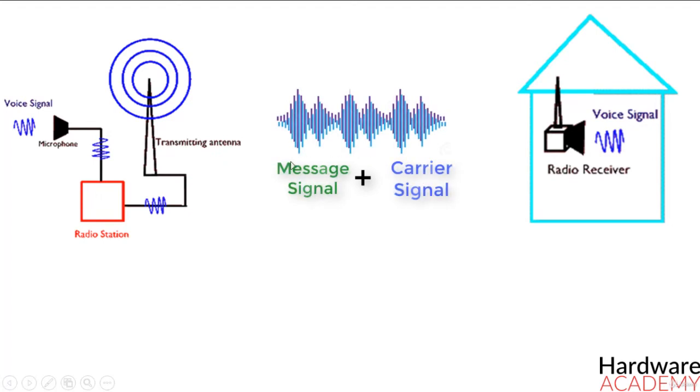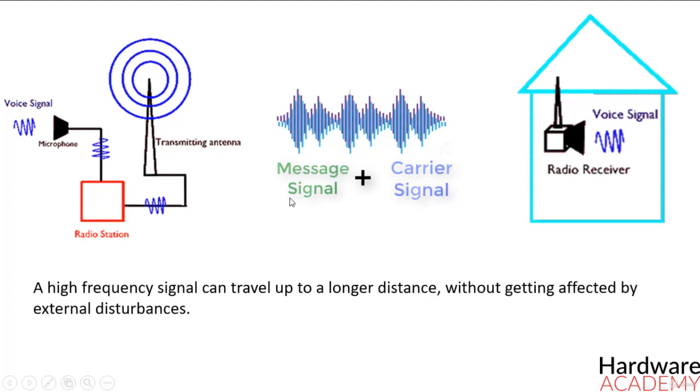A high frequency signal can travel up to a longer distance without getting affected by external disturbances. We take the help of such high frequency signal which is called as a carrier signal to transmit our message signal. Such a process is simply called as modulation.